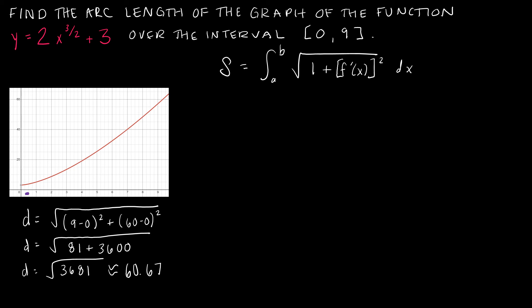We're trying to find the distance. Up to this point the only way we knew how to find the distance was if we had a nice straight line segment, like the one I drew from (0, 0) to (9, 60), which is a decent approximation of the length of our arc. Using just the distance formula we find that it's about 60.67. Now what I want is to find the actual length of the arc drawn in red on our graph, and for that I need A and B — the limits of integration — and then F prime of X squared.